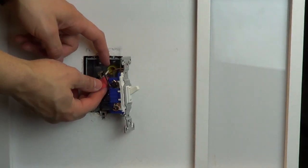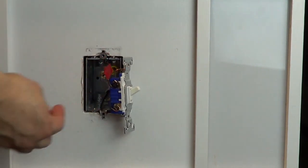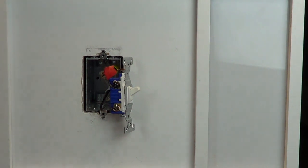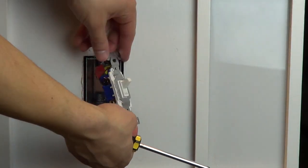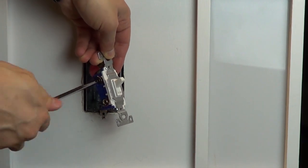Before disconnecting your old switch, look at the screw colors on the sides of the switch. Use a piece of electrical tape to tag the wire connected to the screw that is a different color than the remaining two. Knowing which wire this is will be important when installing your new dimmer.